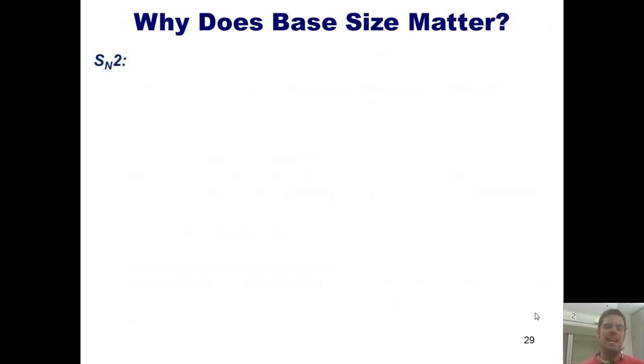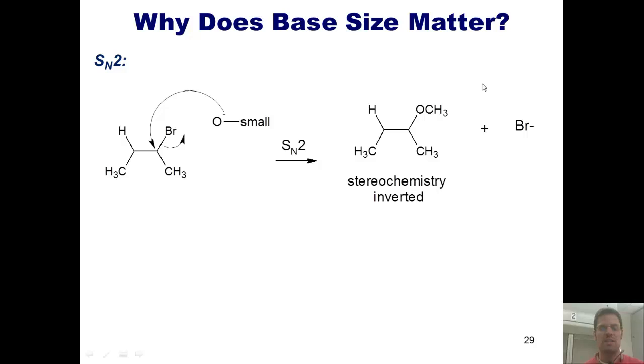Once again, in an SN2 scenario, I've got my molecule, in this case a secondary carbon stuck to bromine, and my strong nucleophile comes in to that position and kicks off my bromide in one fell swoop. Ba-bam! Giving me my product, which has an inverted stereochemistry relative to the stereochemistry at this stereocenter in the starting material.